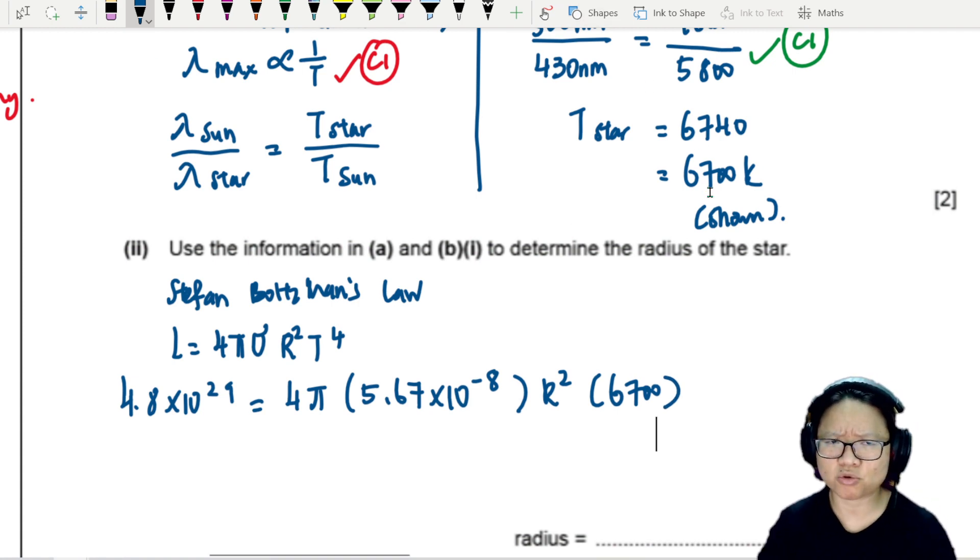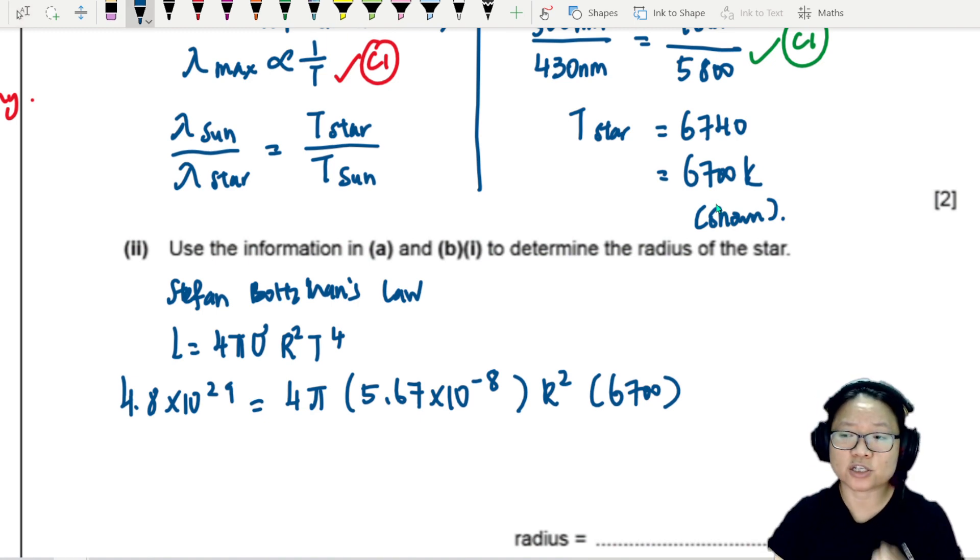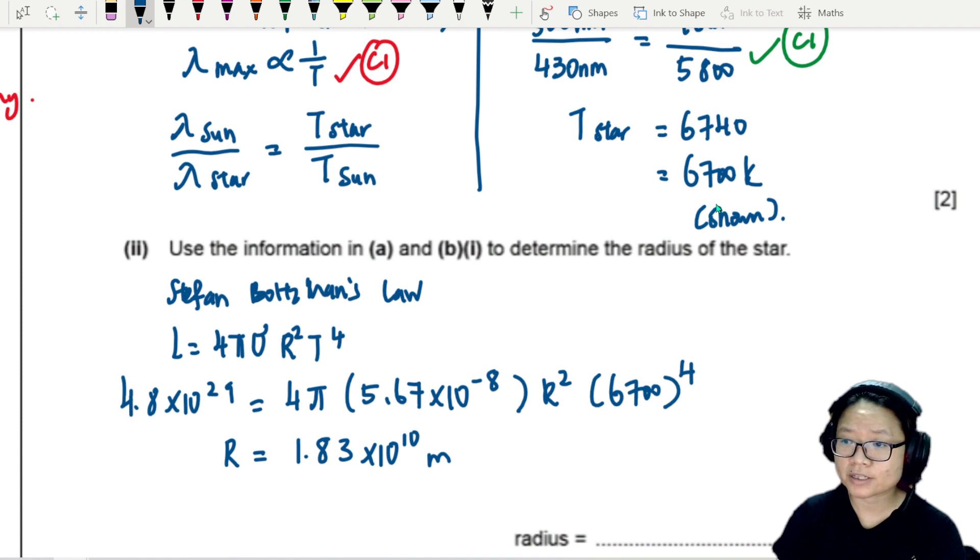Teacher, should I use 6700 or 6740? My recommendation is to stick to 2SF because the mark scheme will show you 2SF. If your intention is to follow the precision of the question, right, that is the intention. We want to follow the precision of the question. So 6700 to the power 4.